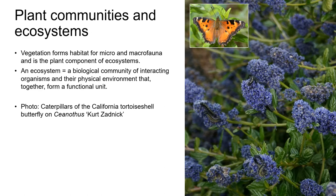The term plant community implies an emphasis on plants, but let's remember that vegetation forms habitat for micro and macro fauna, so a more holistic approach is to think of plant communities as the plant component of ecosystems. An ecosystem can be described as a biological community of interacting organisms and their physical environment that together form a functional unit.